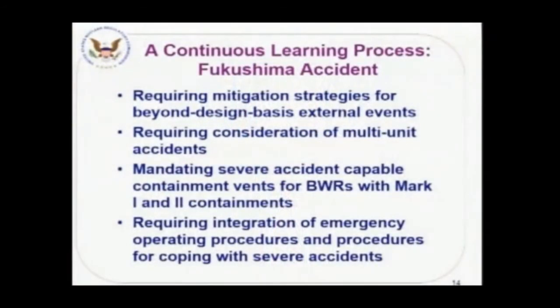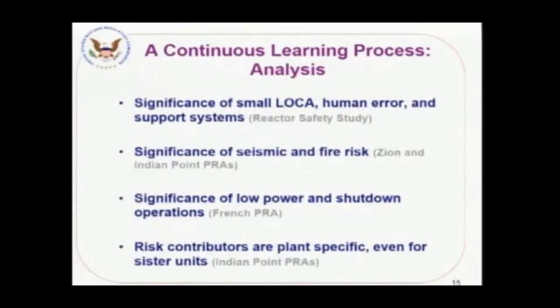Looking at Fukushima: the Commission has issued three orders being implemented right now. We require mitigation strategies for beyond-design-basis accidents. We are studying vigorously the issue of multi-unit accidents — although in the United States there are only a few sites with three units. And there are severe accident-capable containment vents required for BWRs with Mark I and II containments.